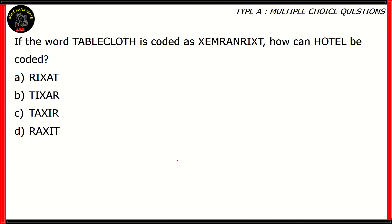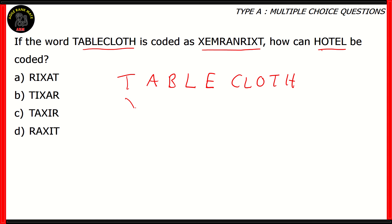Now let's look at the next question. If the word TABLECLOTH is coded as X-E-M-R-A-N-R-I-X-T, how can HOTEL be coded? So again, let's do the obvious: write down TABLECLOTH in caps and write down its code — X-E-M-R-A-N-R-I-X-T. You can notice something: for both places where L was present in TABLECLOTH, the letter R is present in the code. That means R always comes up with L.